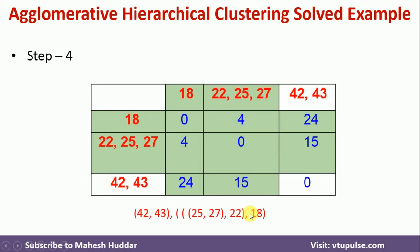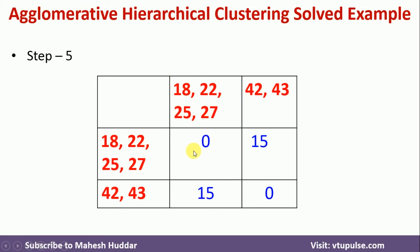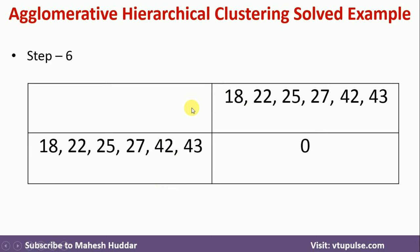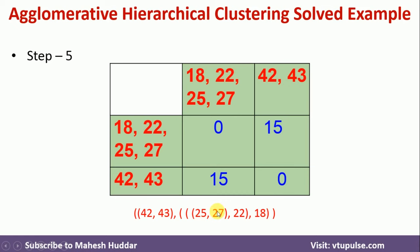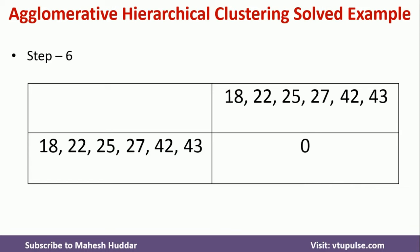From the resulting matrix, 15 is the only remaining distance. You can stop here as this is the final cluster combining everything, or we combine 18, 22, 25, 27, and {42, 43} to get the final resulting matrix. The distance between these two groups is 15. So we first merged 42 and 43, then merged 25 and 27, added 22 to that cluster, then added 18, and finally merged {42, 43} with the entire other cluster to get the final dendrogram.